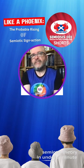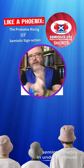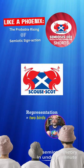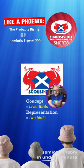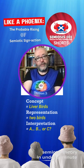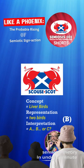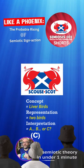Three possibilities for the semiotic science action effect of the representation, two birds of the concept, live a bird on the interpretation. A: no perception of semiotic science action. B: a perception of two red bird shapes. C: a perception of two lovebirds.